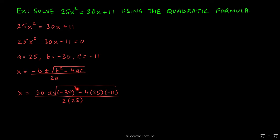which is negative 30 squared, minus 4 times a, which is 25, times c, which is negative 11, all over 2 times a, which again is 25.